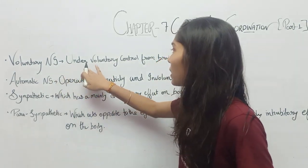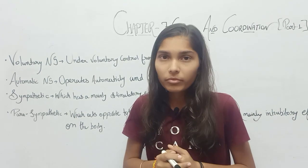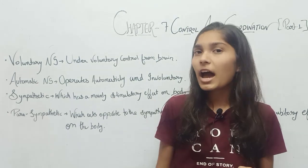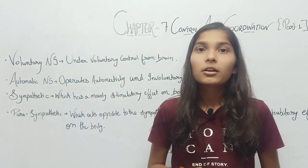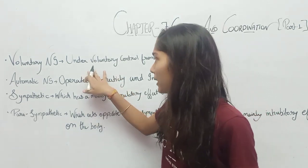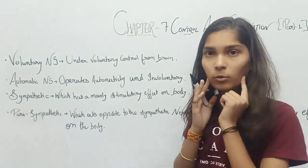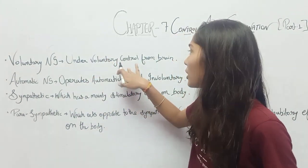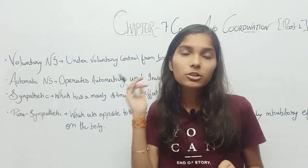The Voluntary Nervous System is under voluntary control from the brain. Our muscles move as we wish — we can move them when we want to, like moving our hand or neck. So it is under the voluntary control of the brain.